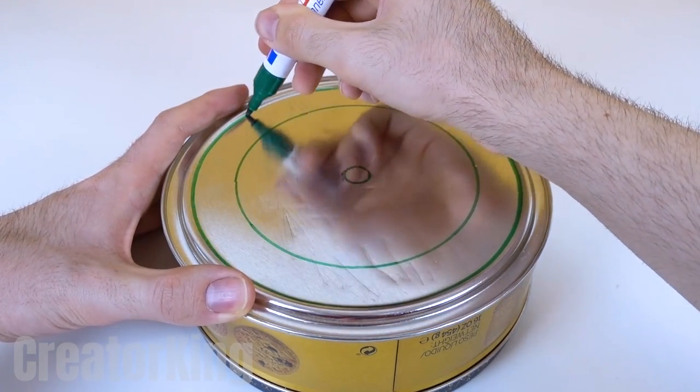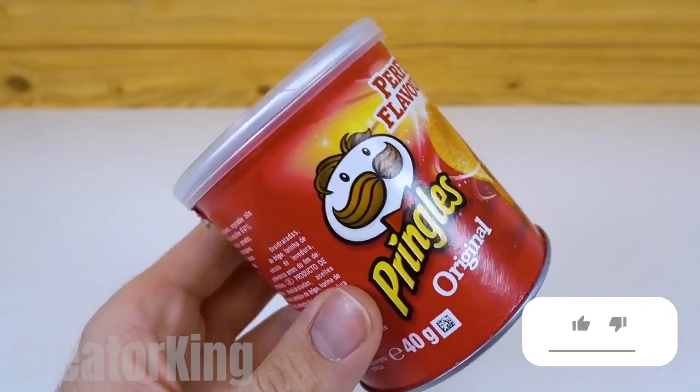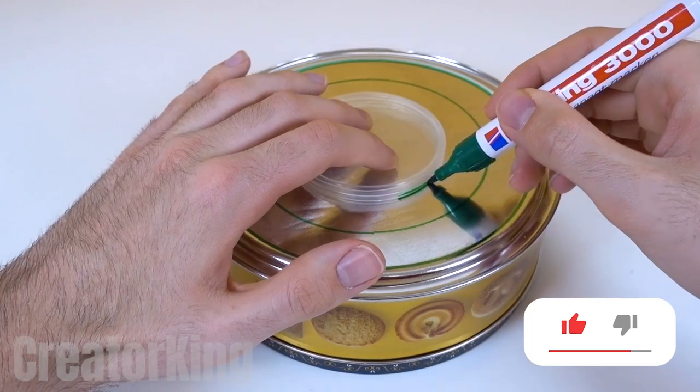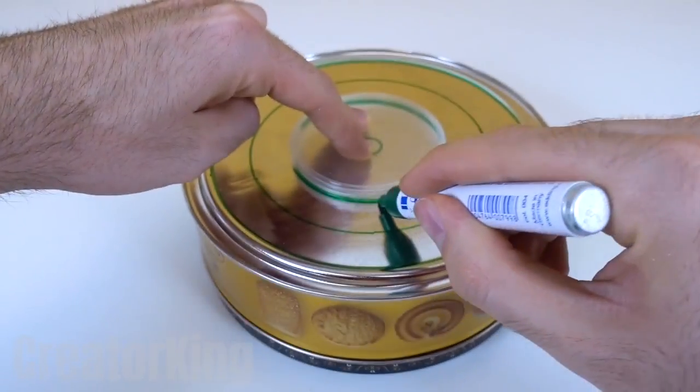While we're at it let's continue with a can of Pringles, but this time a small one because I'm on a diet. Place the lid in the center of the base and trace its circumference too.